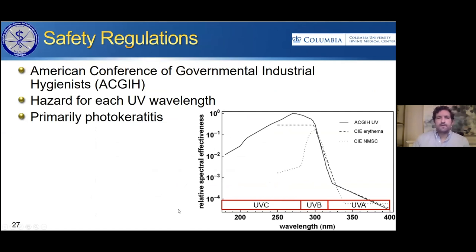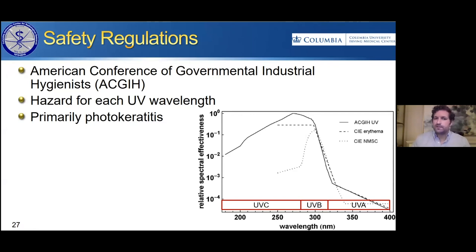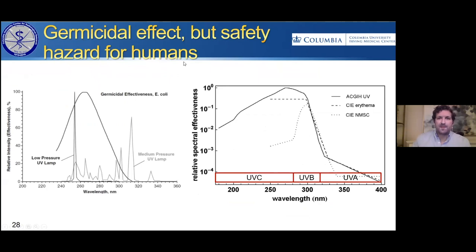Safety regulations have been made by governing bodies such as the American Conference of Governmental and Industrial Hygienists. They've compiled research on safety data for both skin and eye exposure into a set of recommendations. The higher the curve for a given wavelength, the more dangerous it is. The peak of danger is at 270 nanometers, dropping off throughout the UVC and then largely from UVB to UVA. This is primarily based on photokeratitis, since the eyes are the most sensitive organ for UV. Since germicidal effectiveness and human safety hazard peak at almost the same point, all UVC installations have tried to avoid any direct human exposure — radiating the top of the room, within the HVAC system, or in completely enclosed areas.